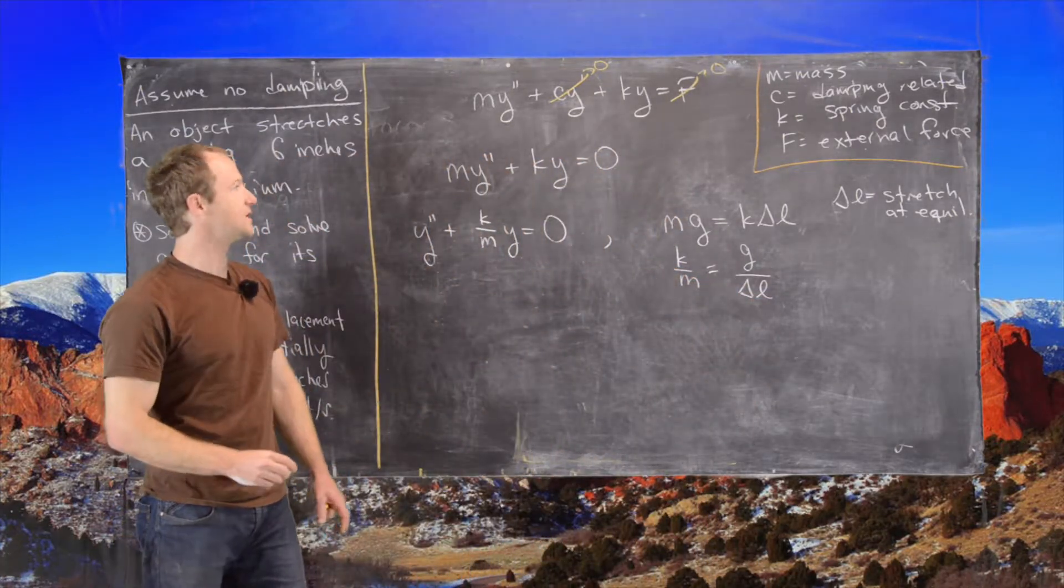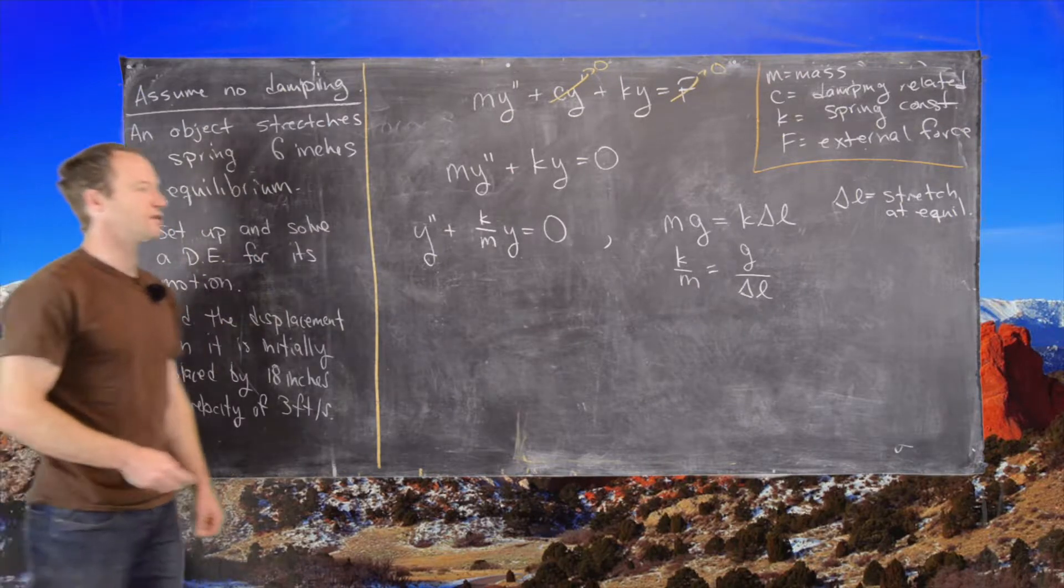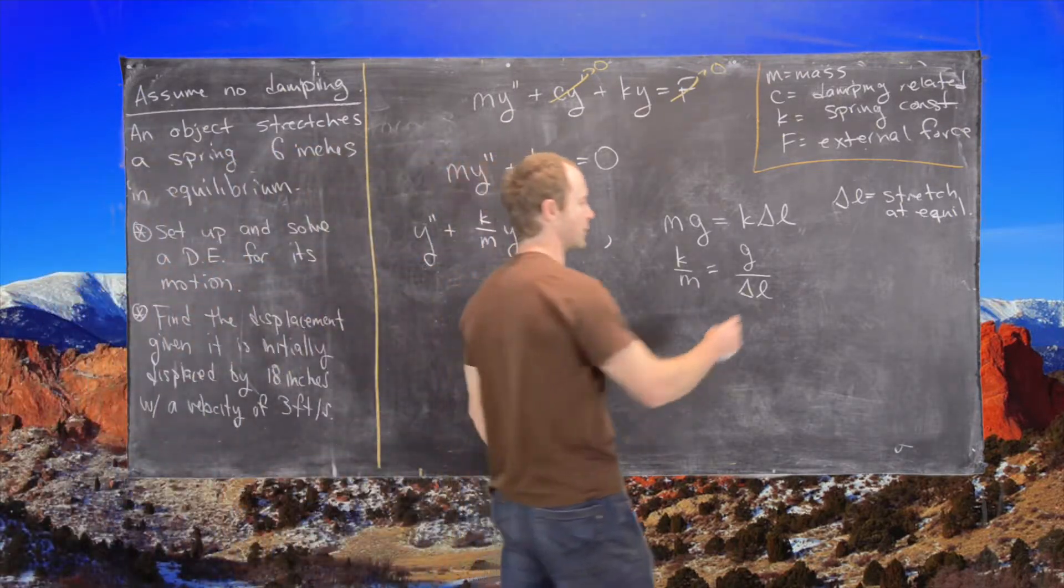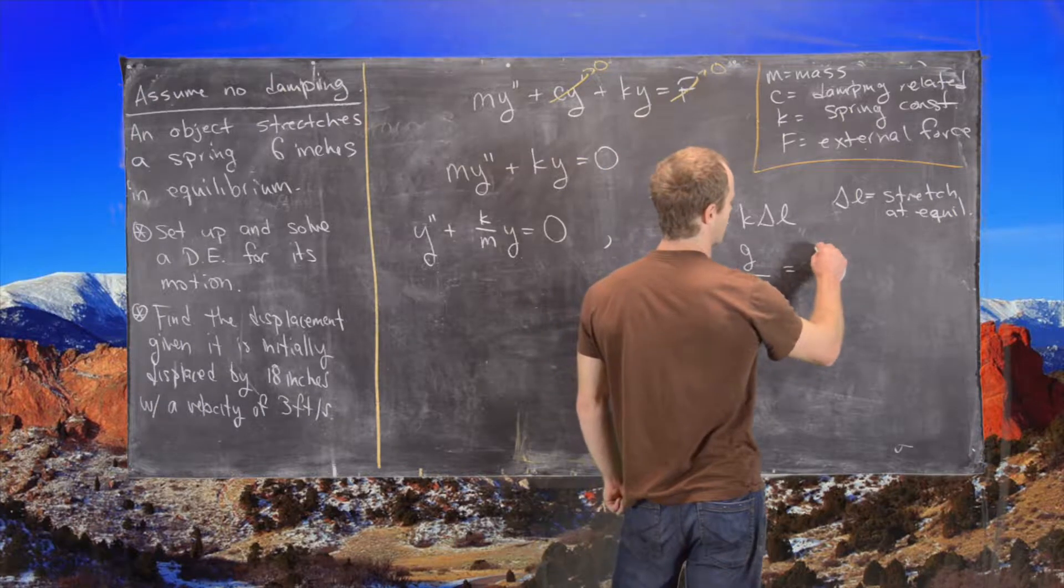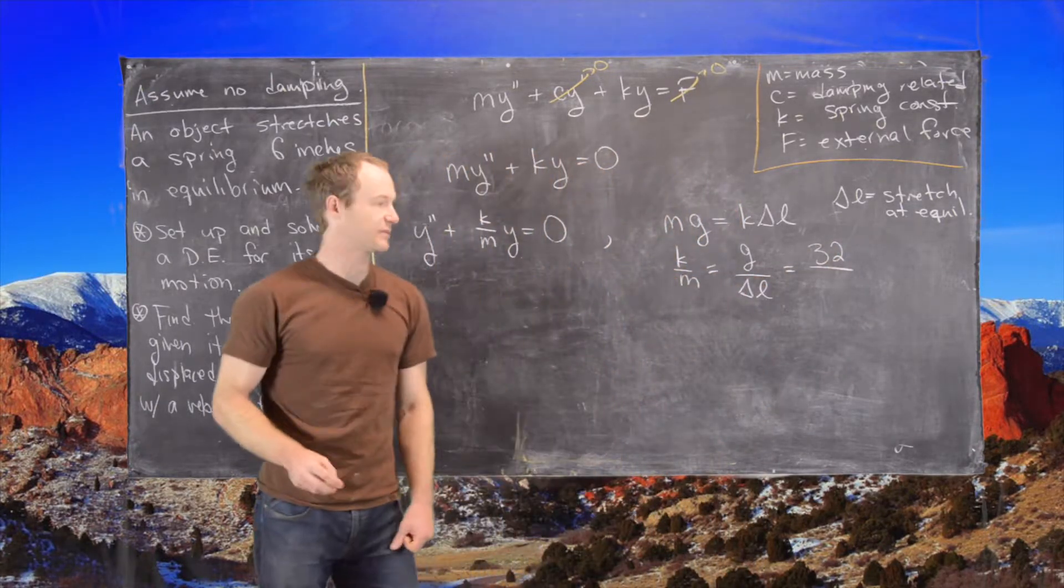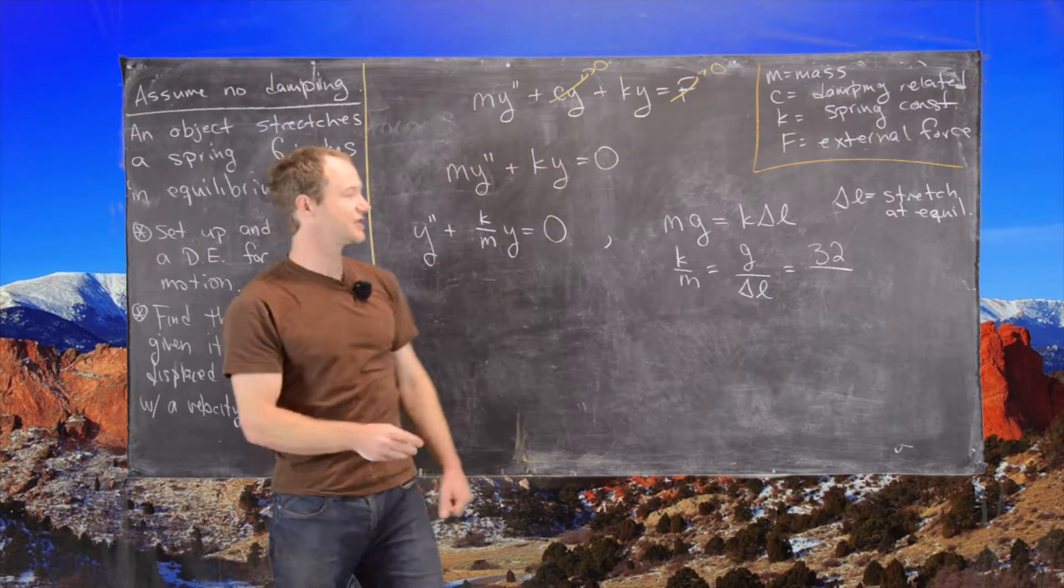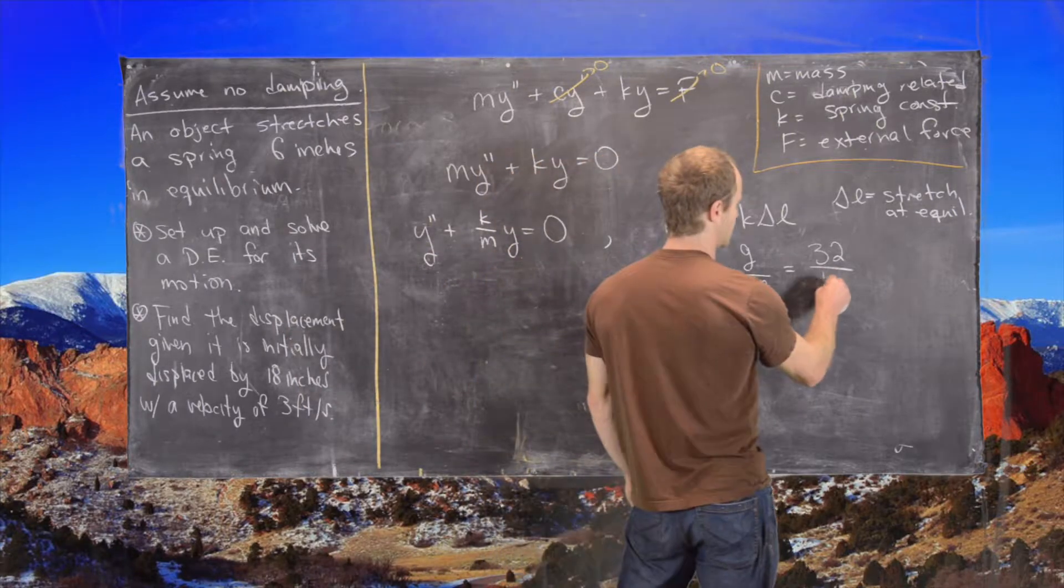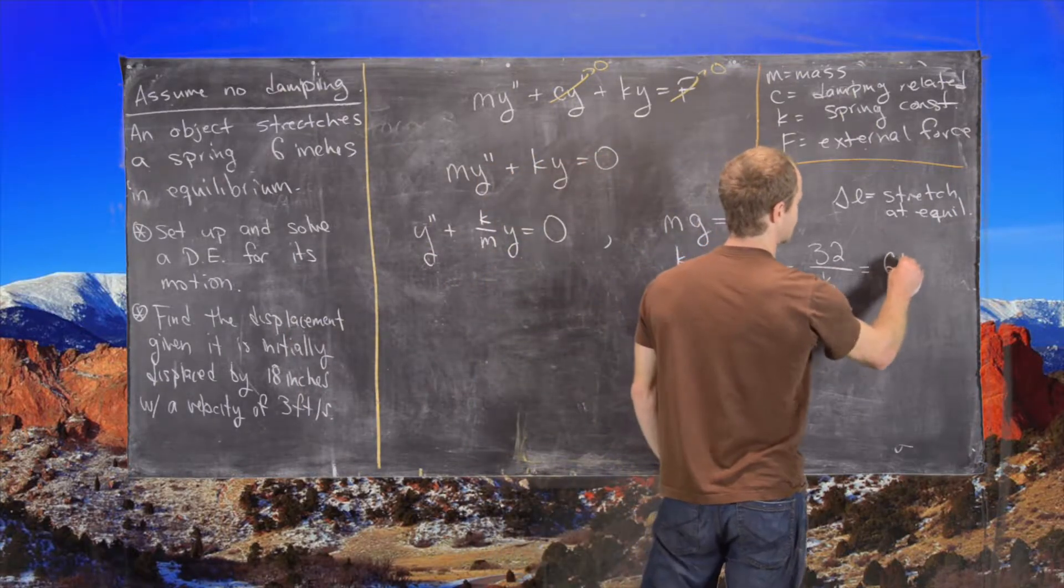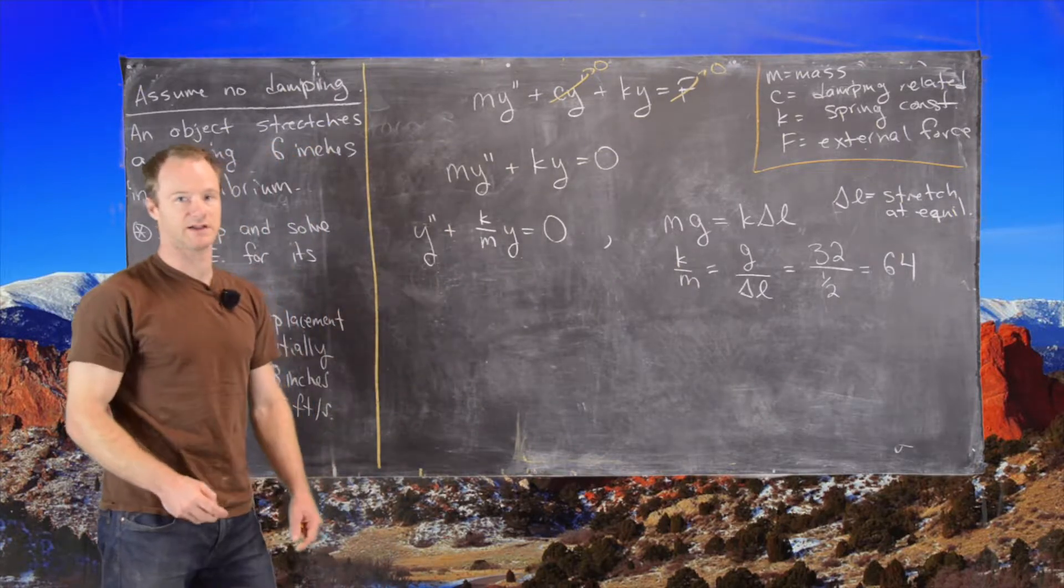And so now we're using kind of funky units here. We're using inches and feet and everything like that. So what we'll do is we'll use the fact that the acceleration due to gravity is 32 feet per second per second. And then since this is stretching six inches, that is one half of a foot. So that means this quantity is 64. This k over m quantity is 64.